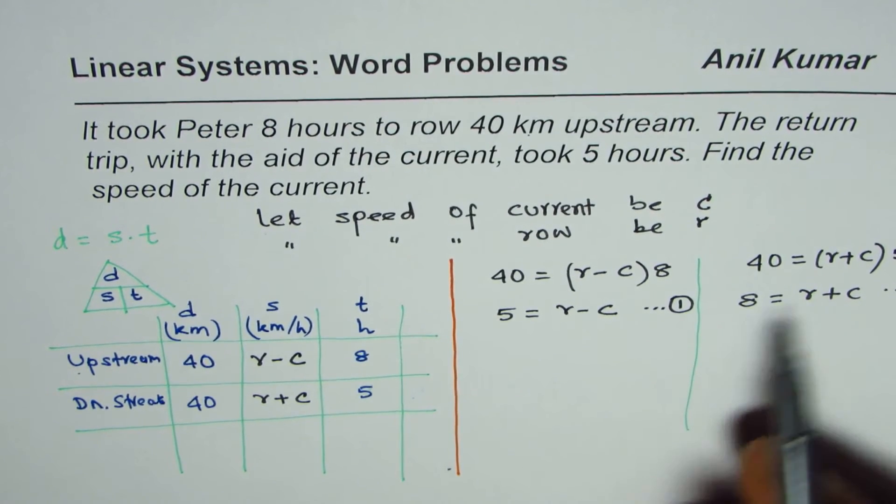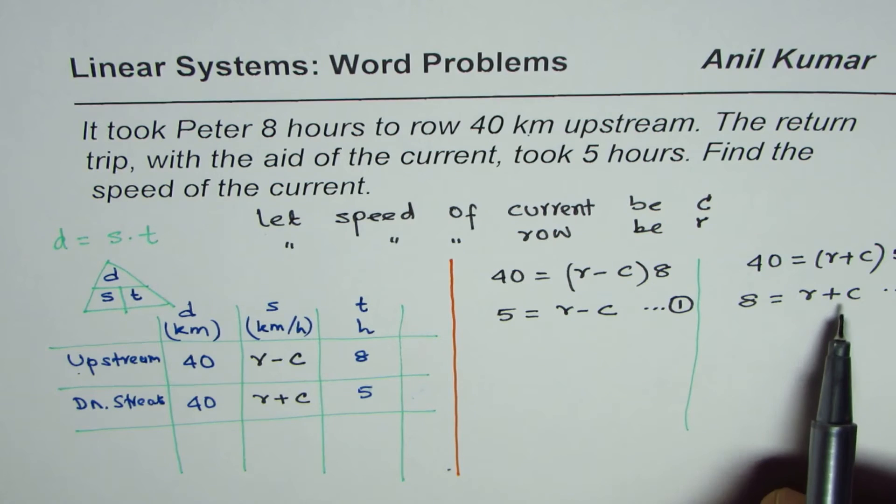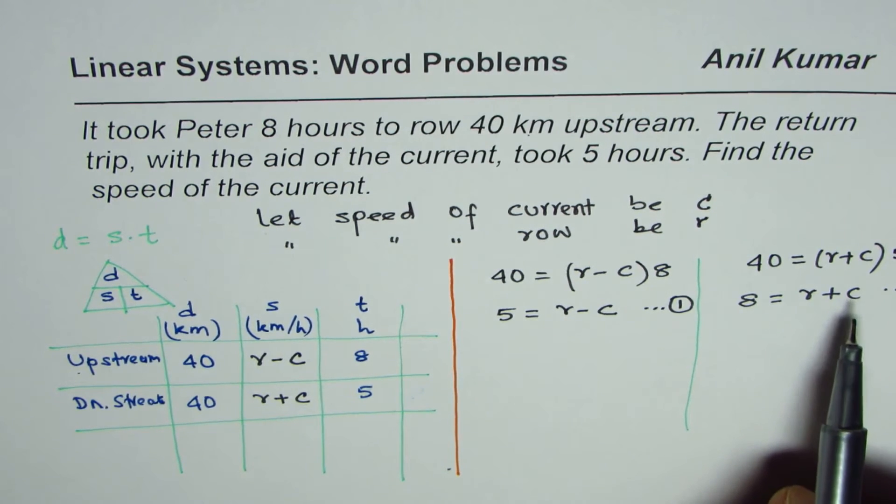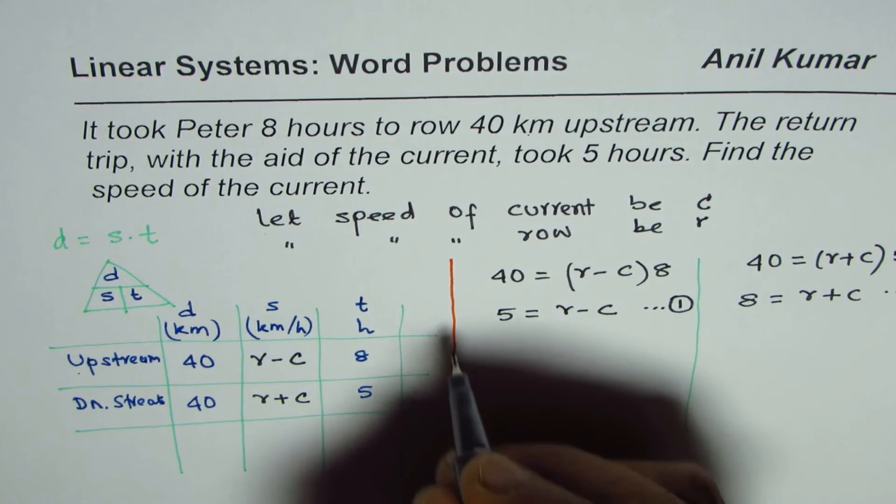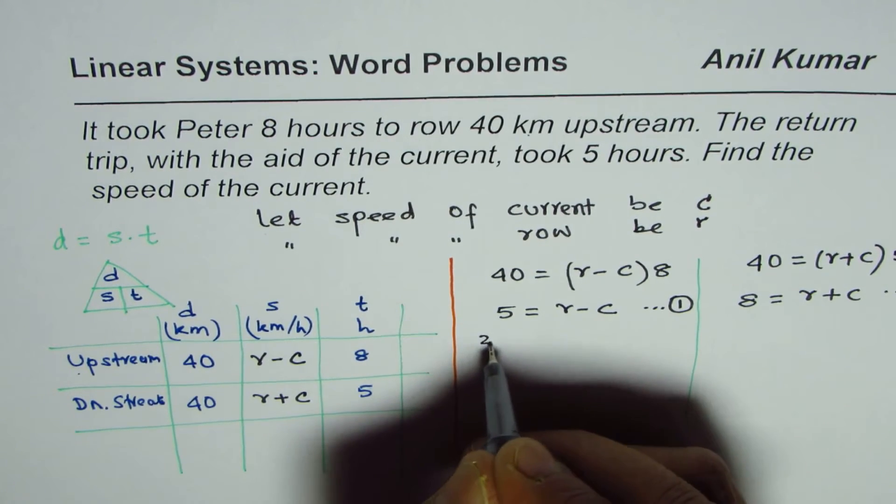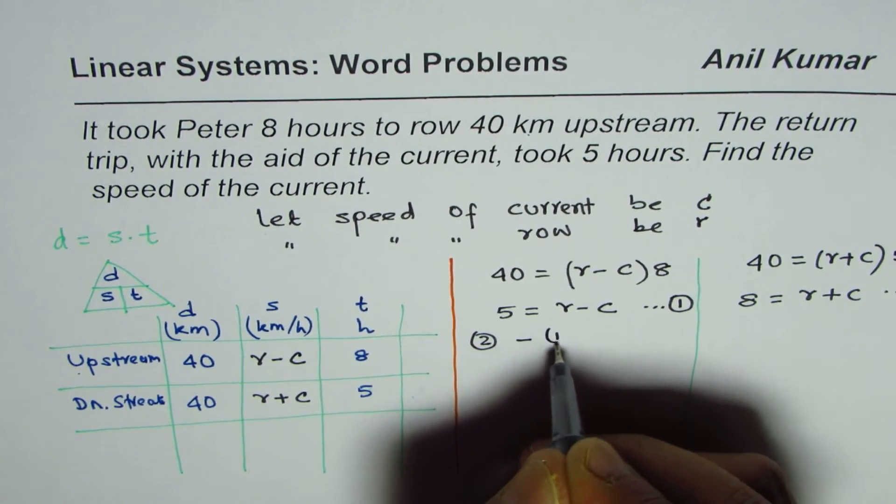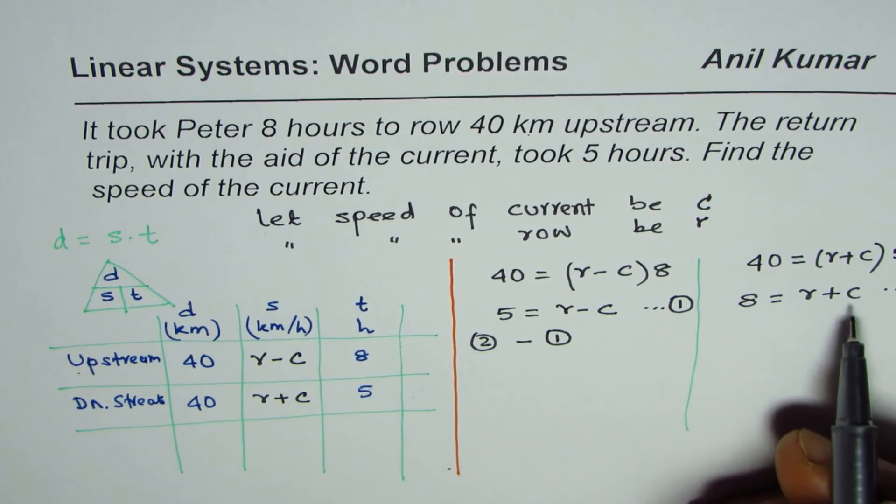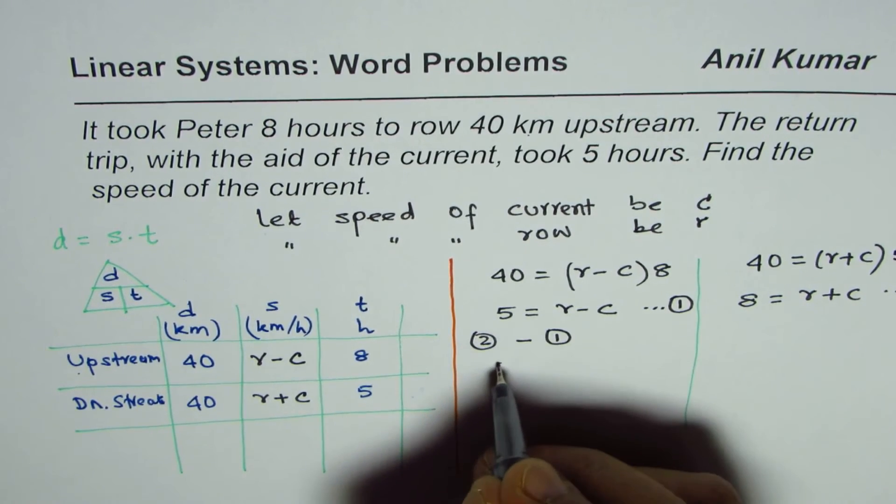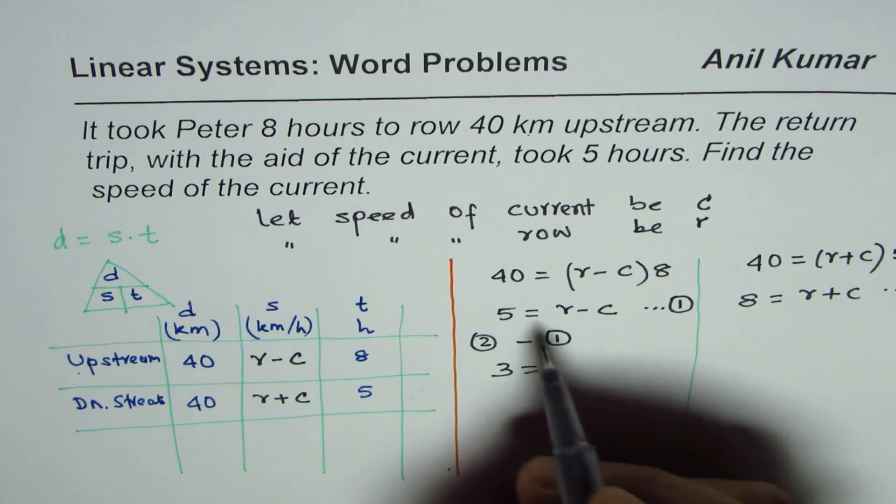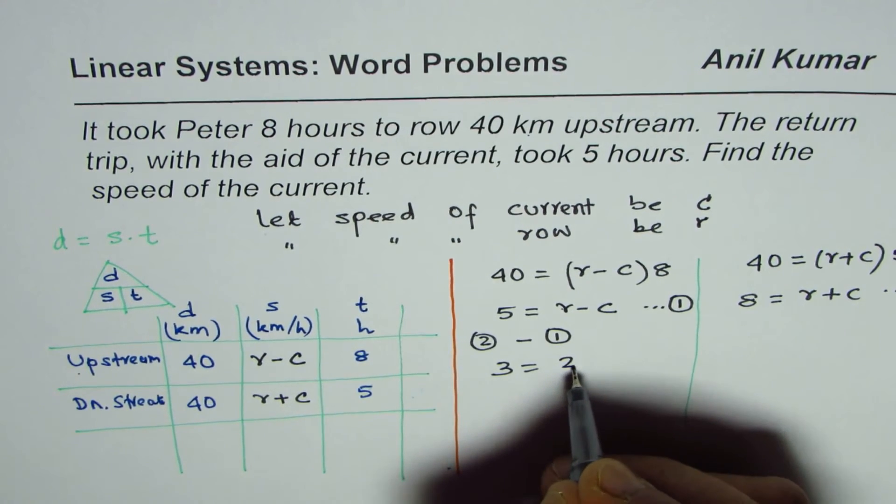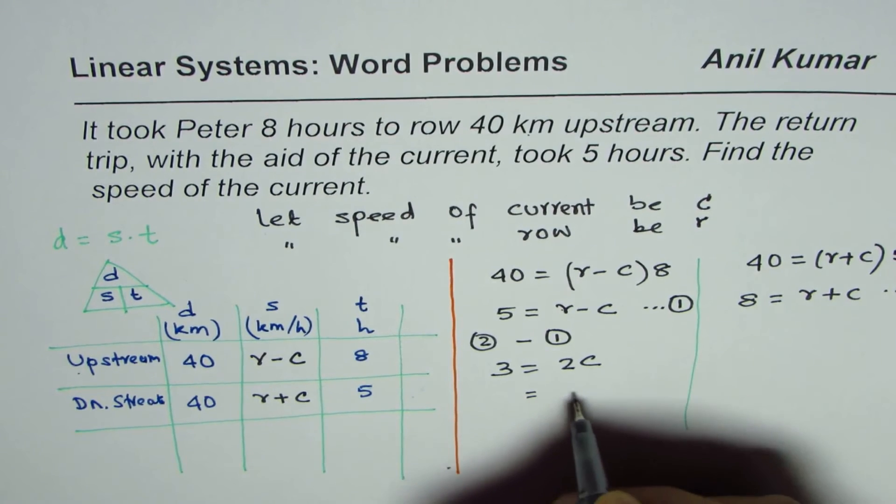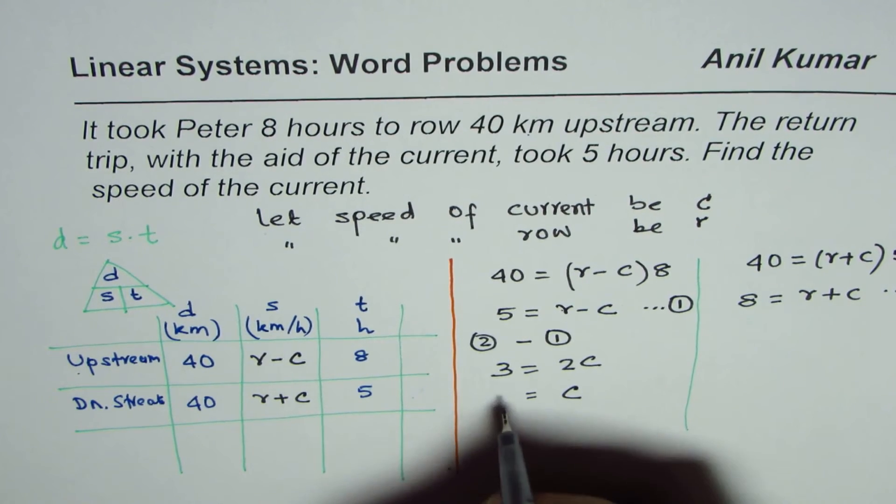Now we can eliminate. Since I need to find what current is, I will do equation 2 take away equation 1. So this is what I'll do. So 8 take away 5 is 3, r take away r is 0, c take away minus c is 2c, and that gives you c equals 3 over 2.